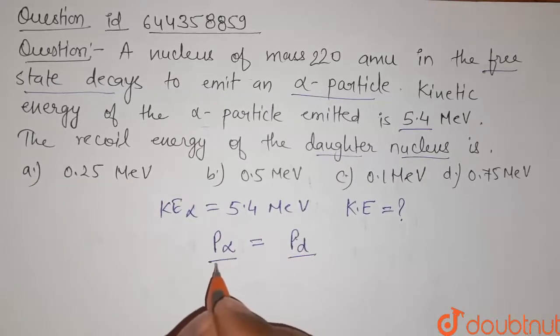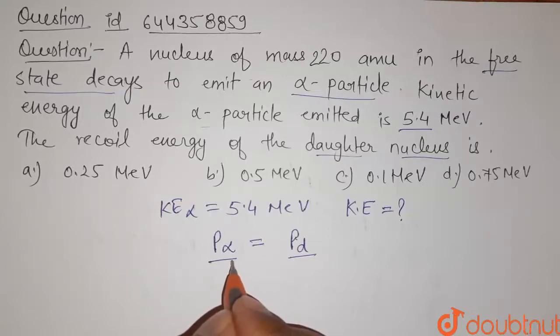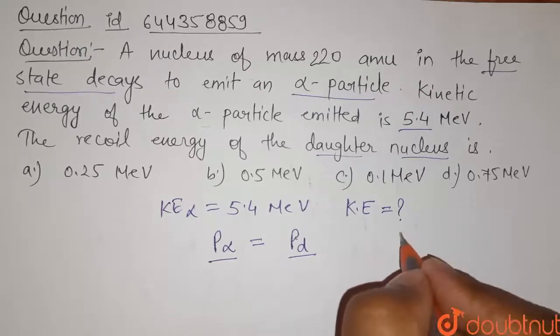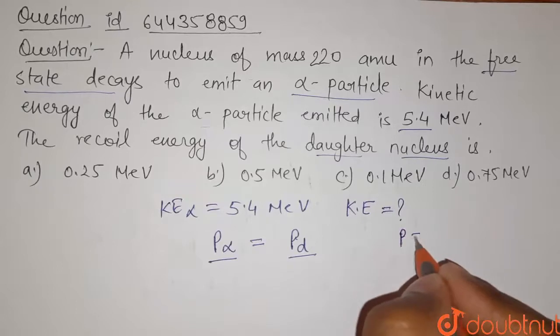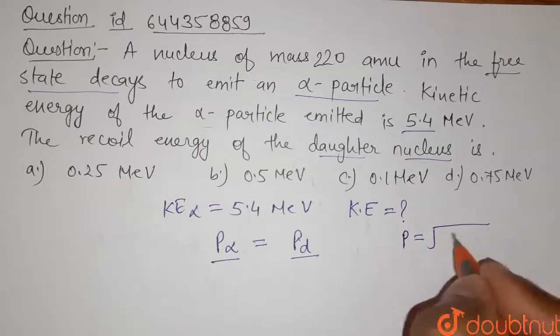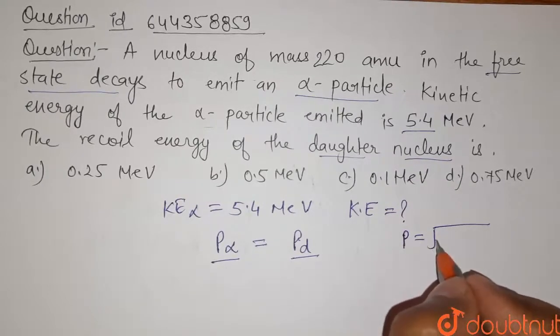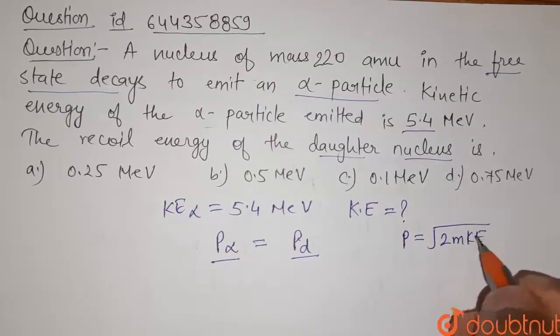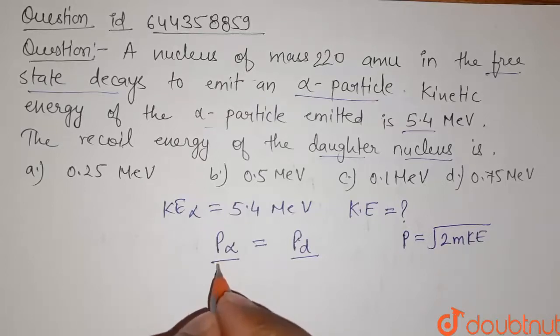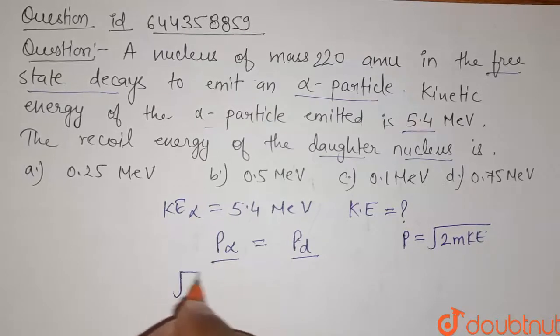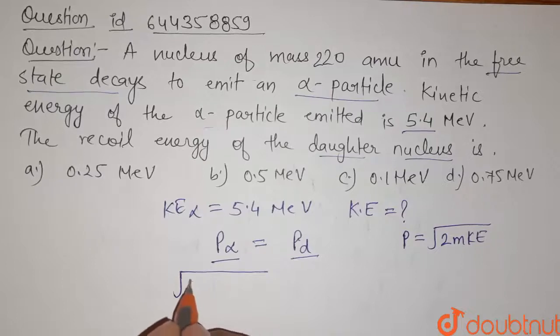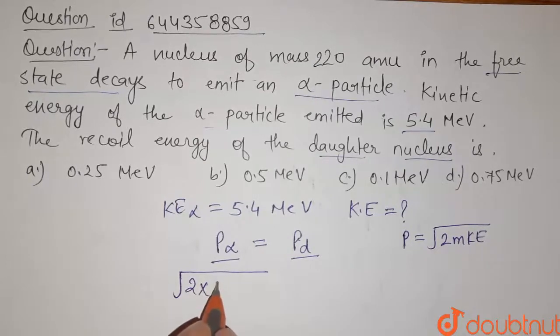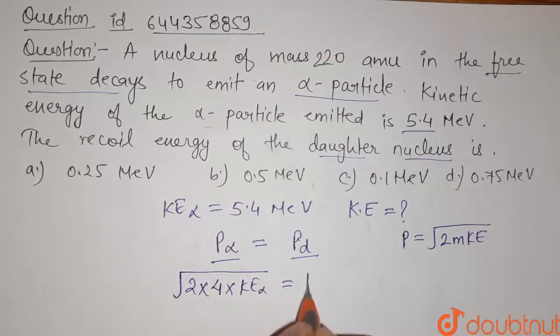Here we're only talking about the magnitude. Now we know that momentum of a particle is related to its kinetic energy by the relation p equals square root of 2mKE. So using this relation, we have p alpha equals square root of 2 times the mass of alpha, here is 4, times the kinetic energy of alpha.